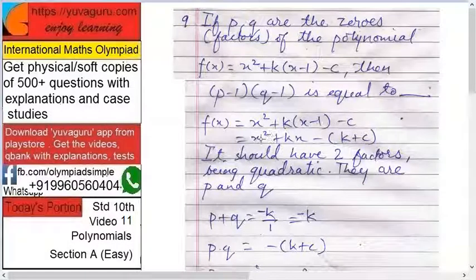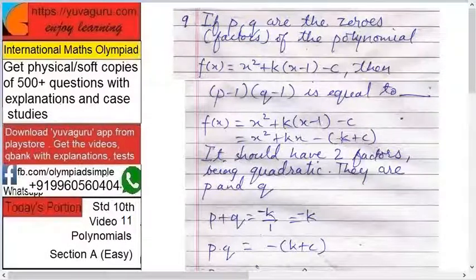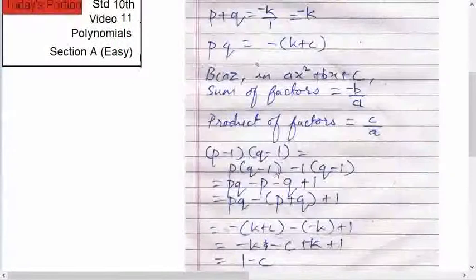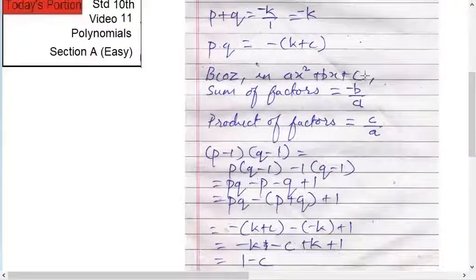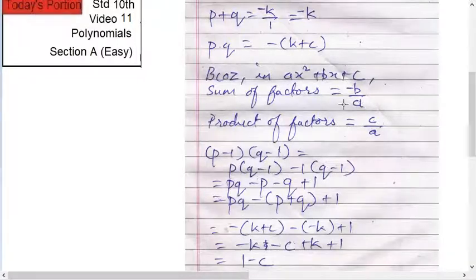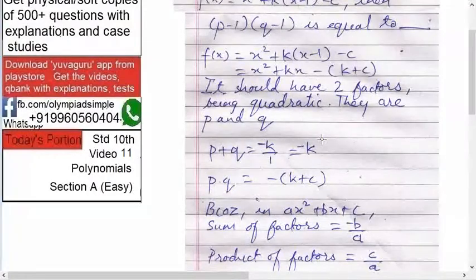Now this equation is of the form ax squared plus bx plus c. See this, when the equation is ax squared plus bx plus c, the sum of the factors is minus b upon a and product of the factors is c upon a.